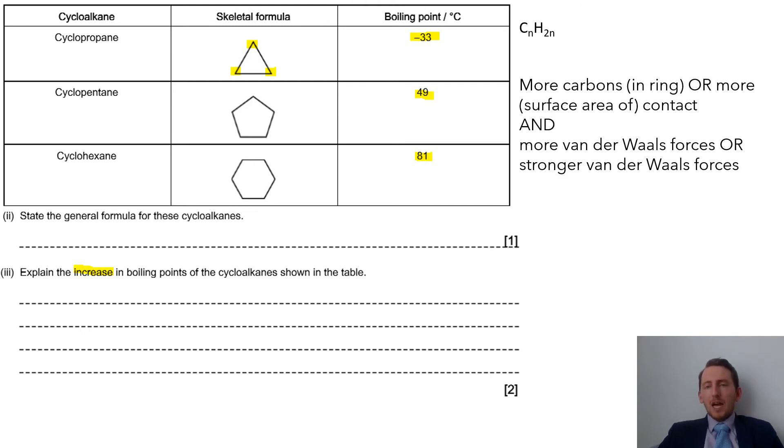Because we have more carbons, we then have more points of contact. Therefore we've got more van der Waals forces or London forces going on. The more of those forces you have, the more you have to overcome, so the higher the boiling point is going to be.